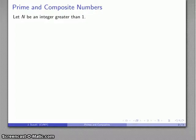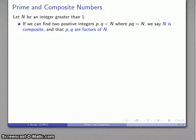1 is a special case for reasons we'll discuss later. If I can find two positive integers, p and q, both of which are less than n, where the product is equal to n, we'll say that n is a composite number and that p and q are factors of n.